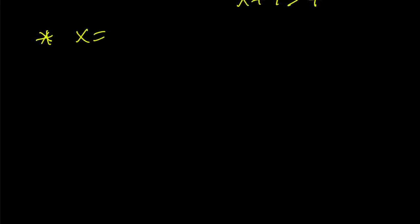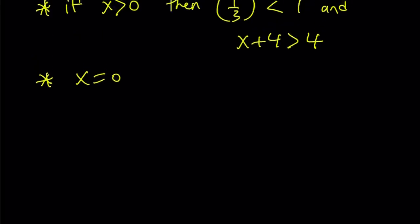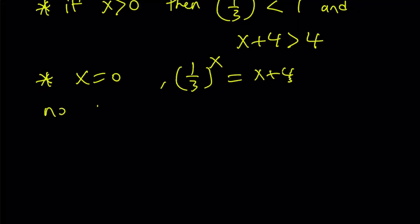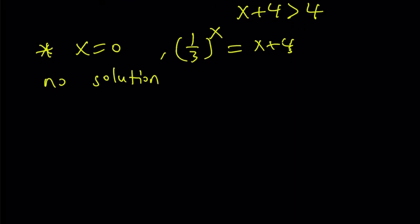And, what about x equals 0? Well, let's rewrite our equation. Our equation was 1 third to the power x equals x plus 4. Obviously, for x equals 0, there are no solutions. So, x equals 0 is not a solution. The only option left is negative values. So, we're hoping to find something. Otherwise, we're going to say this equation has no solutions.